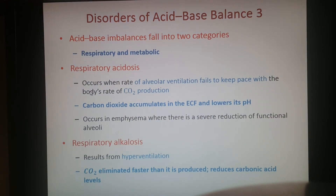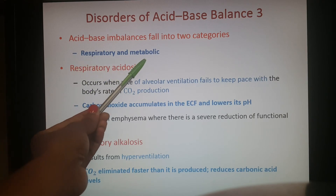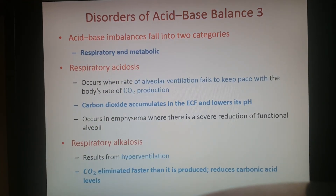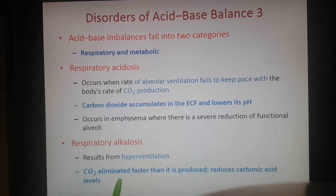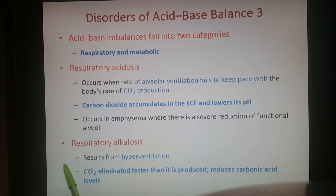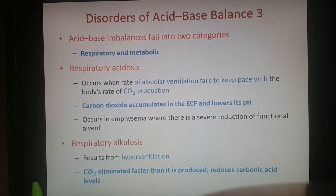There are two types of acid-base imbalance: respiratory and metabolic. Respiratory acidosis involves CO2 accumulating in the extracellular fluid, which goes through the carbonic acid reaction releasing hydrogen and lowering pH. Respiratory alkalosis occurs when the body gets rid of CO2 — typically from hyperventilating — faster than it's produced, reducing carbonic acid levels, leaving less hydrogen in the extracellular fluid, and making the body more basic.